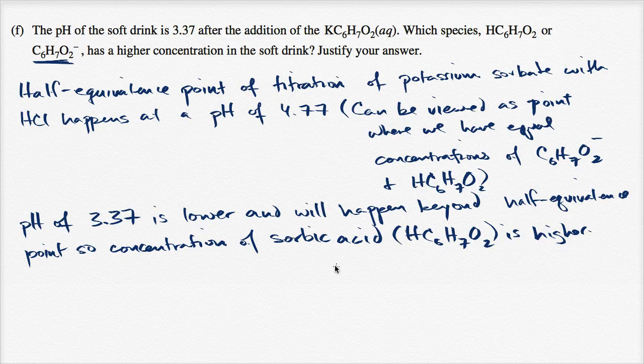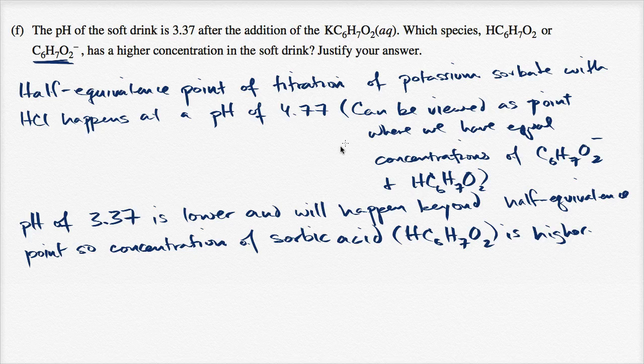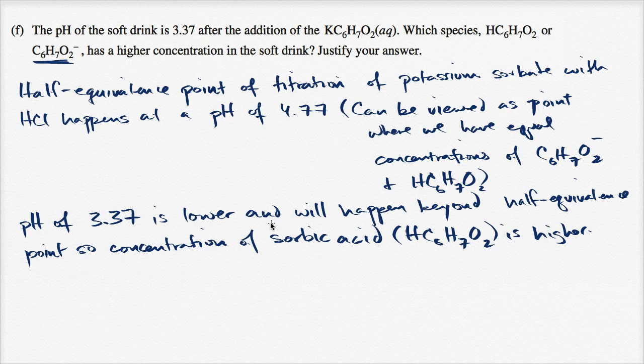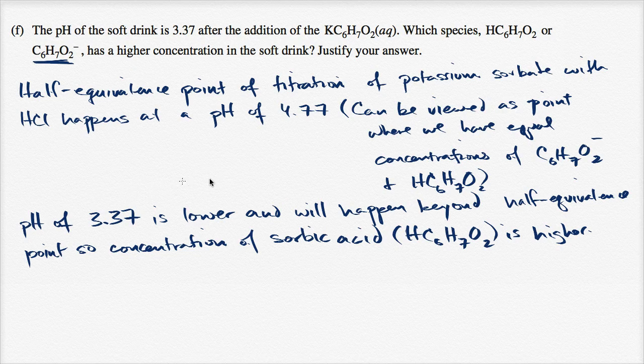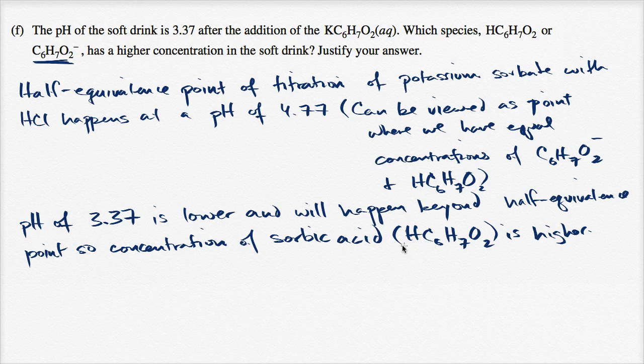When you're starting off, if you're doing a titration, your concentration of potassium sorbate will be higher, then you keep titrating it, it keeps reacting with the hydrochloric acid, you get to the half-equivalence point where these two things are gonna have equal concentrations, and if you keep titrating it, well then you're gonna become more acidic and you're gonna have a higher concentration of the sorbic acid.